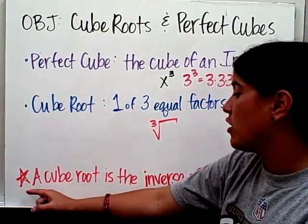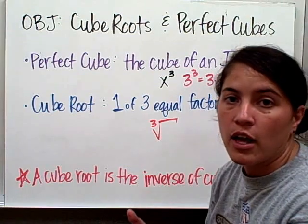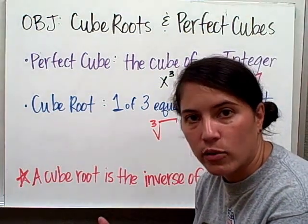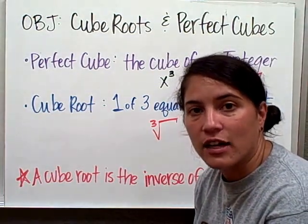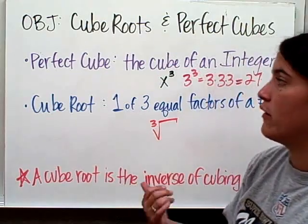And then just so you know, a cube root is the inverse of cubing a number. So if you do a number to the third power, the inverse of that is the cube root of a number.